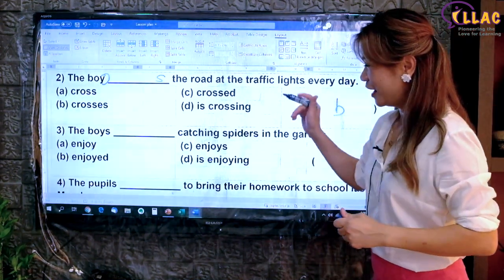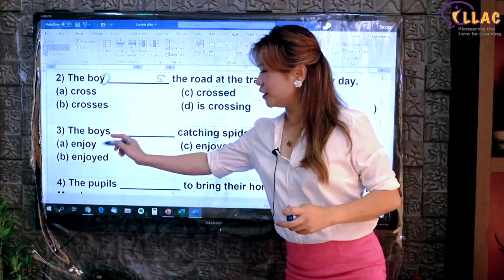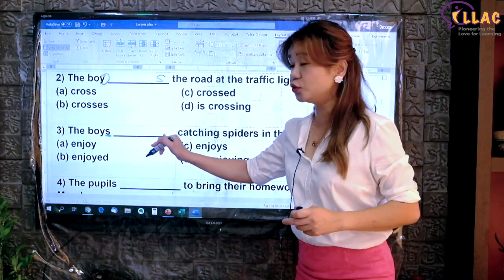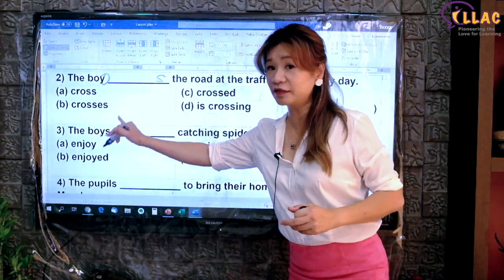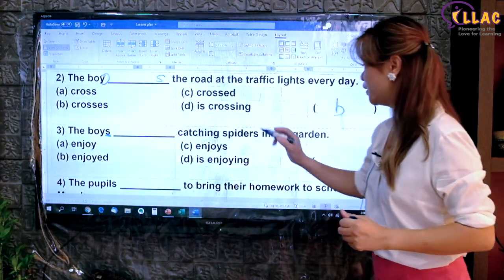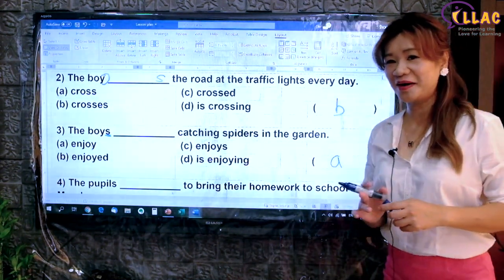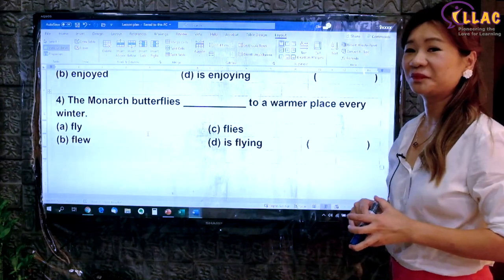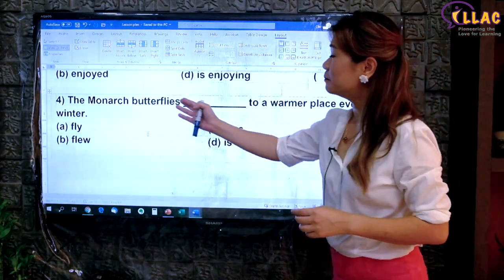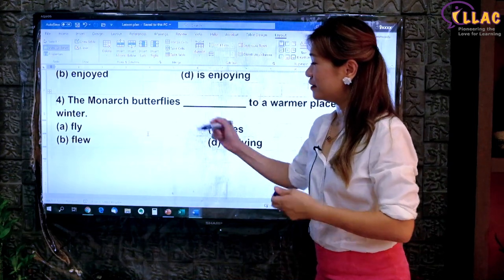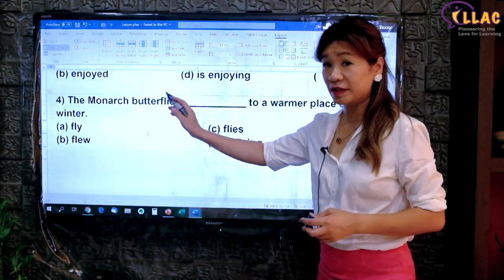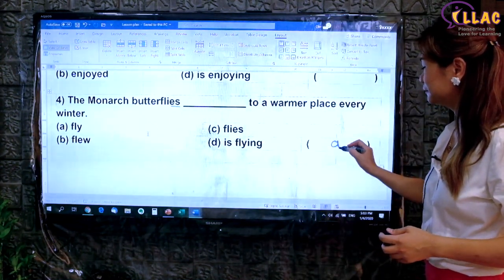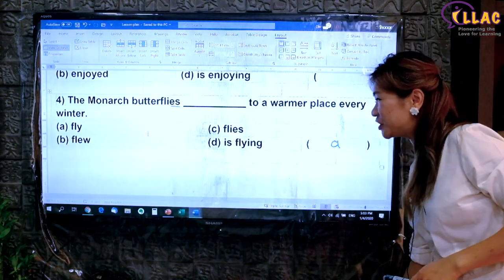Did you get that right? Over here, 'the boys' — you see there is an S. So this is a plural subject, which means a plural verb without S. When there's S in front, no S behind. So 'enjoy' will be the answer. Did you get that right as well? Good job. You may pause the video here to try the next question. The answer will be 'the monarch butterflies' — there is an S in front, plural subject, plural verb, no S behind. The answer will be A. Did you get that right?